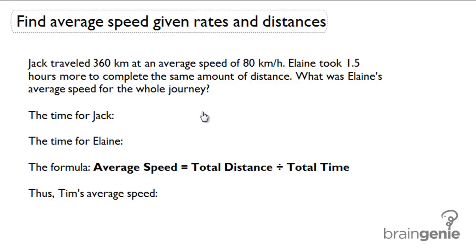Find average speed given rates and distances. Jack traveled 360 kilometers at an average speed of 80 kilometers per hour. Elaine took 1.5 hours more to complete the same amount of distance. What was Elaine's average speed for the whole journey?